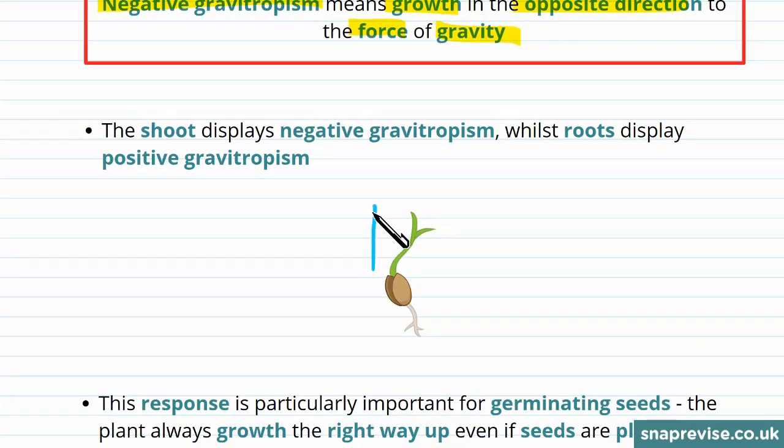You can see here that the shoot is growing in the opposite direction to the force of gravity, while the roots are growing in the same direction as the force of gravity.